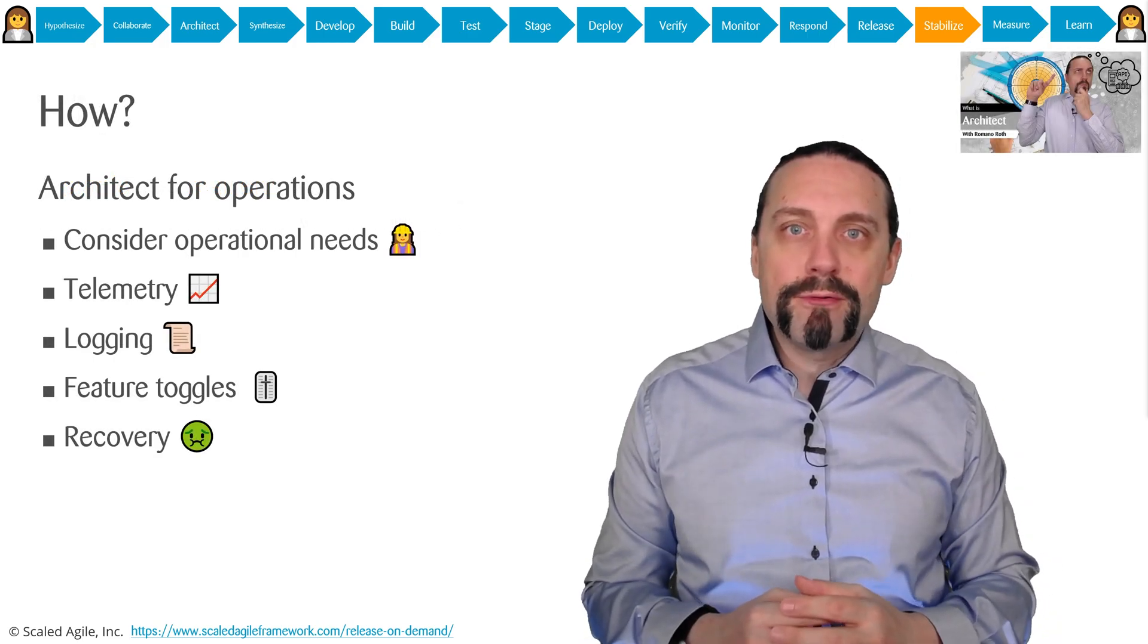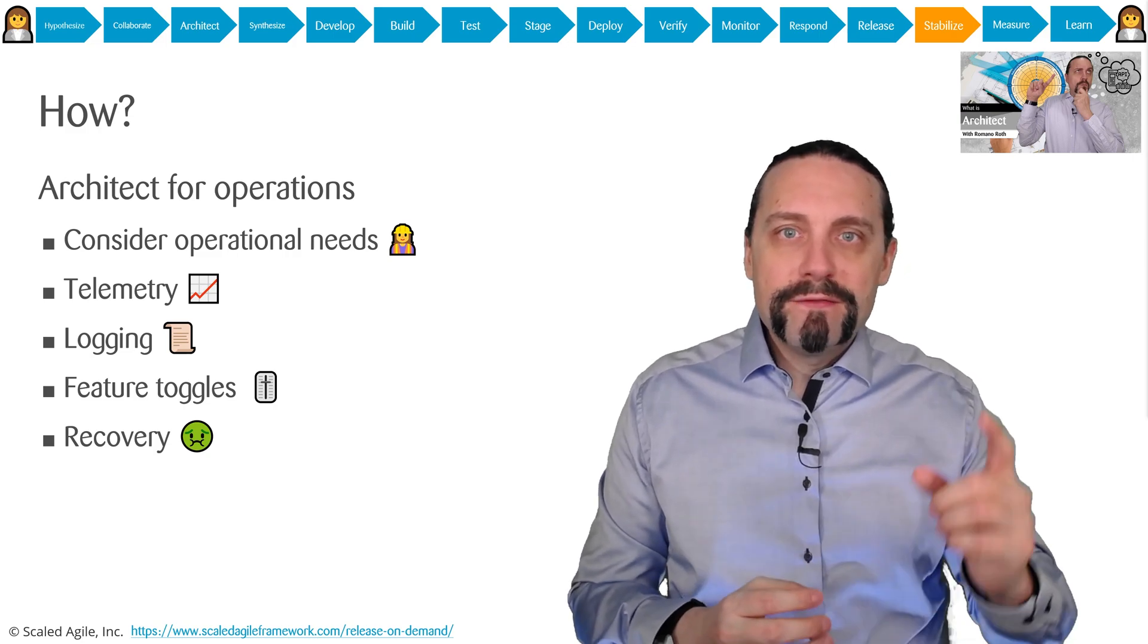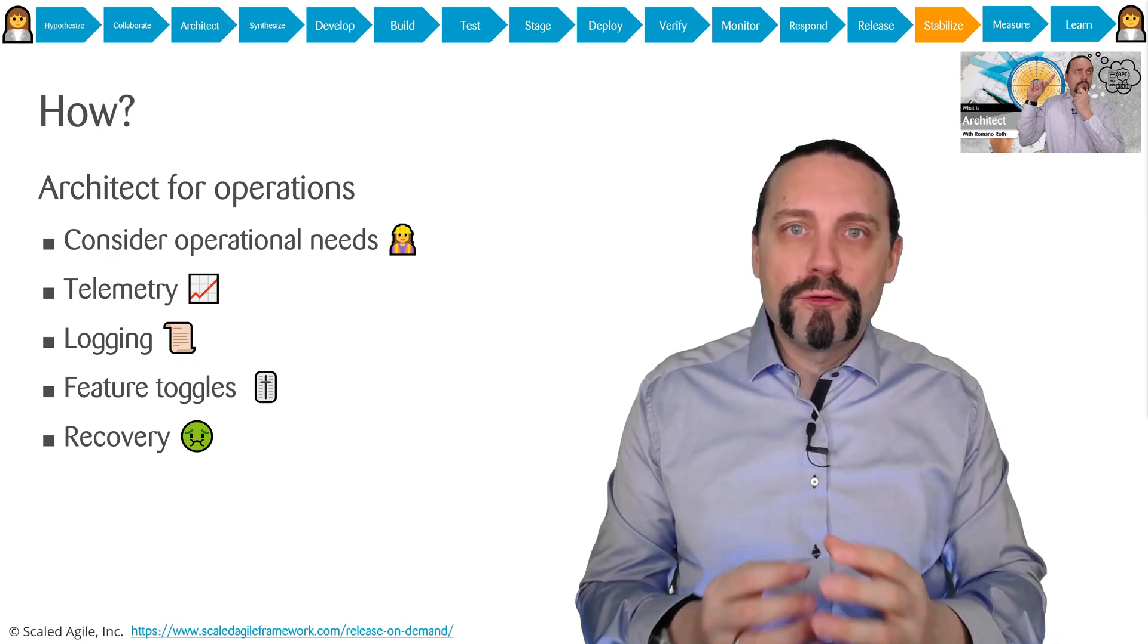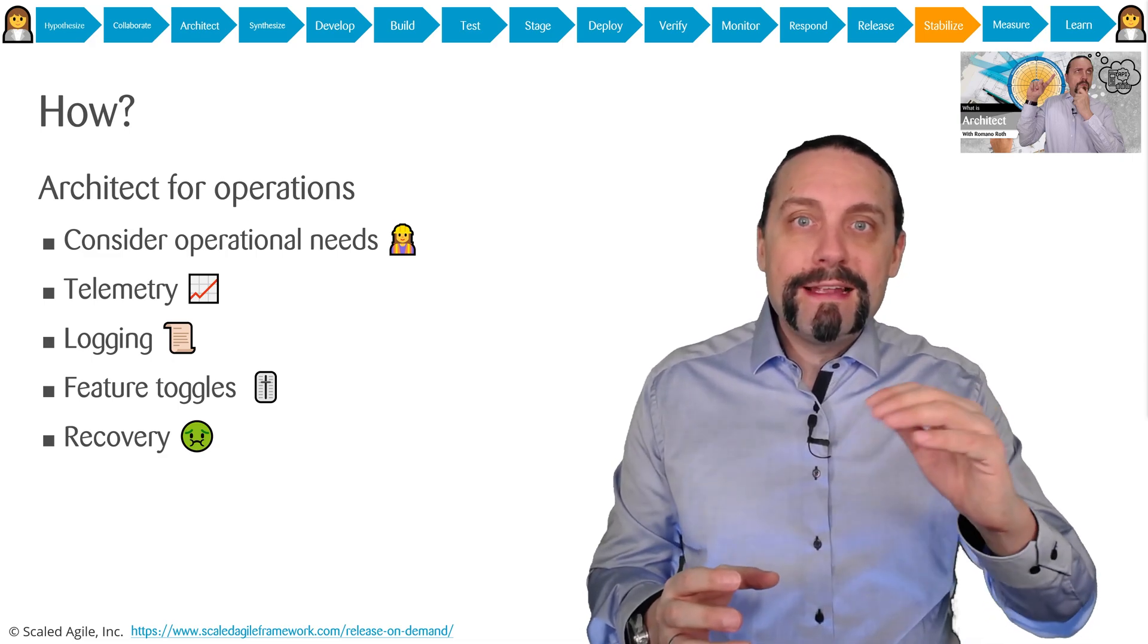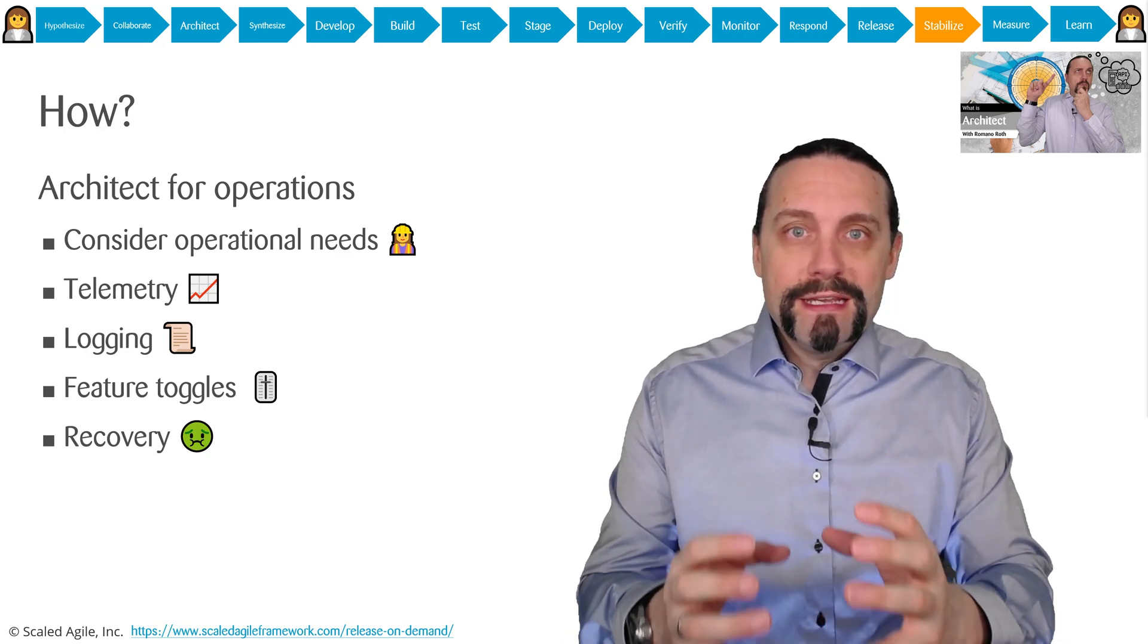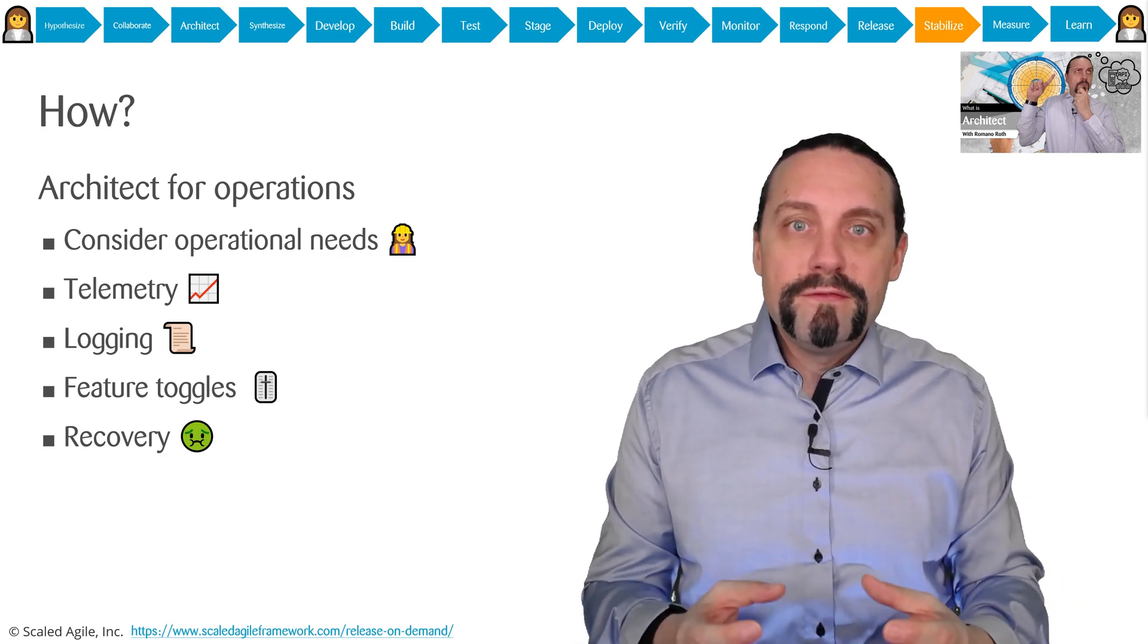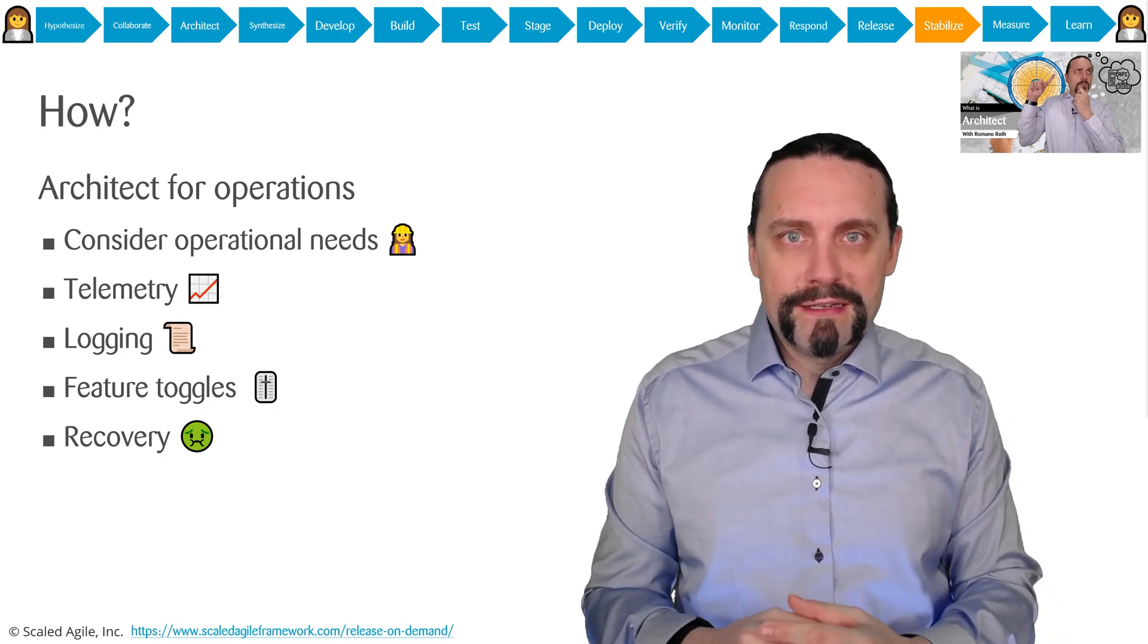Perhaps you remember in the activity of architecture, which you can see in this video up here, we already talked about how to architect for operability. Now all of these things that we previously have done come together in this step here. If we didn't do any of these things or did them wrong, we will have a hard time in this step.